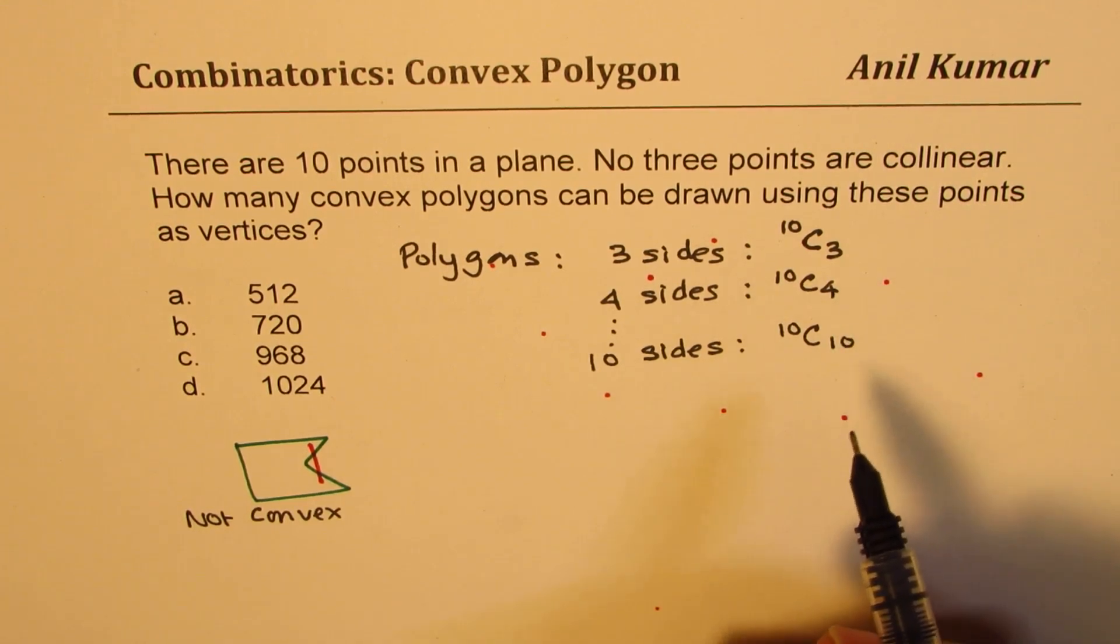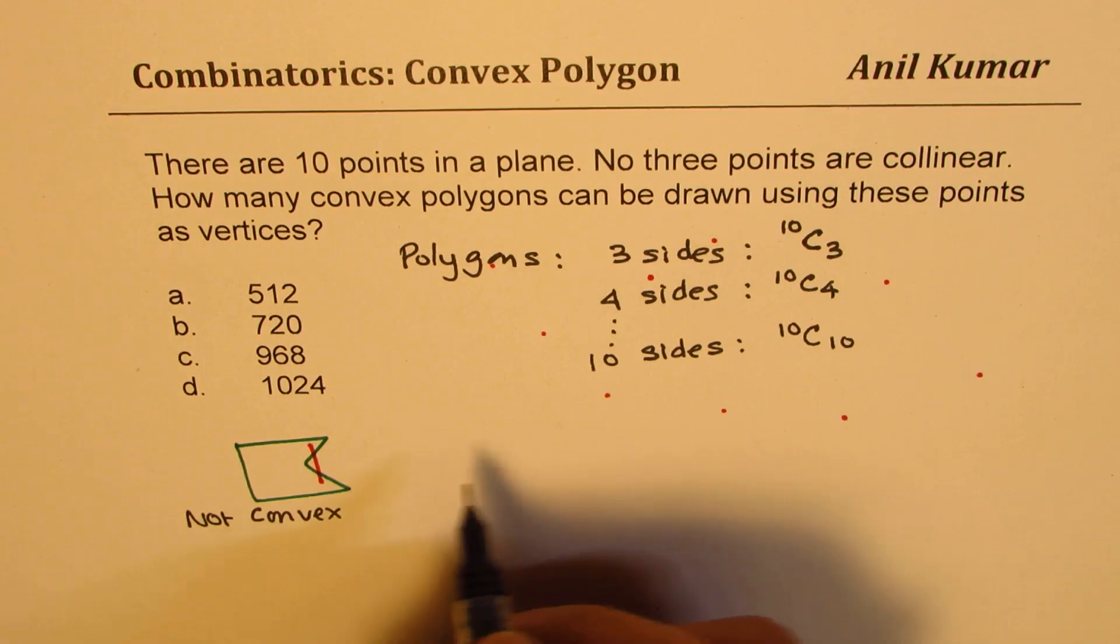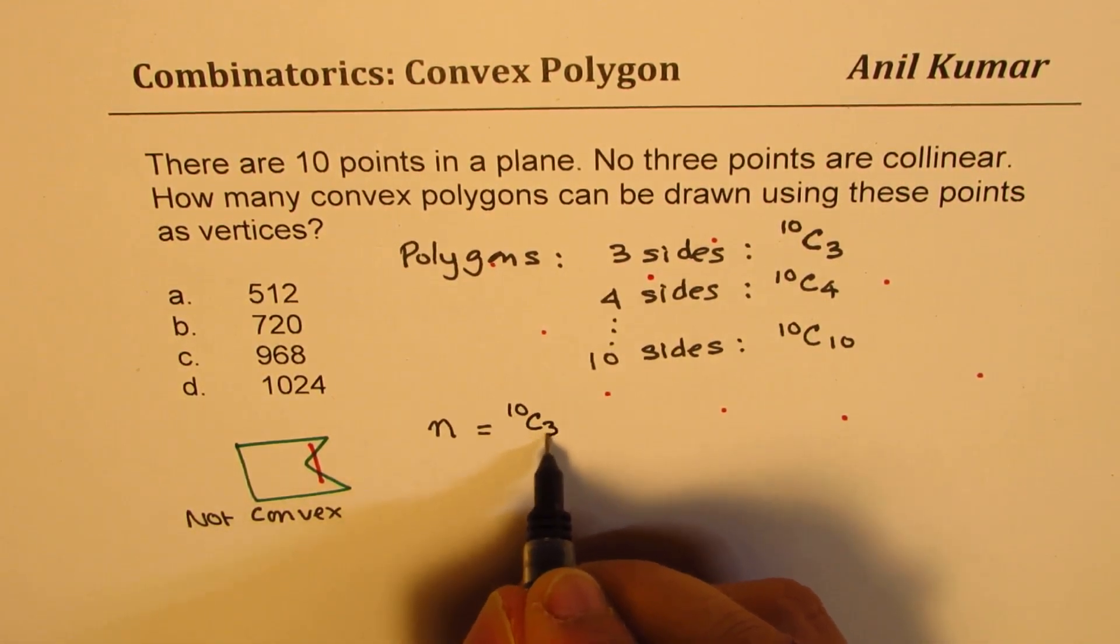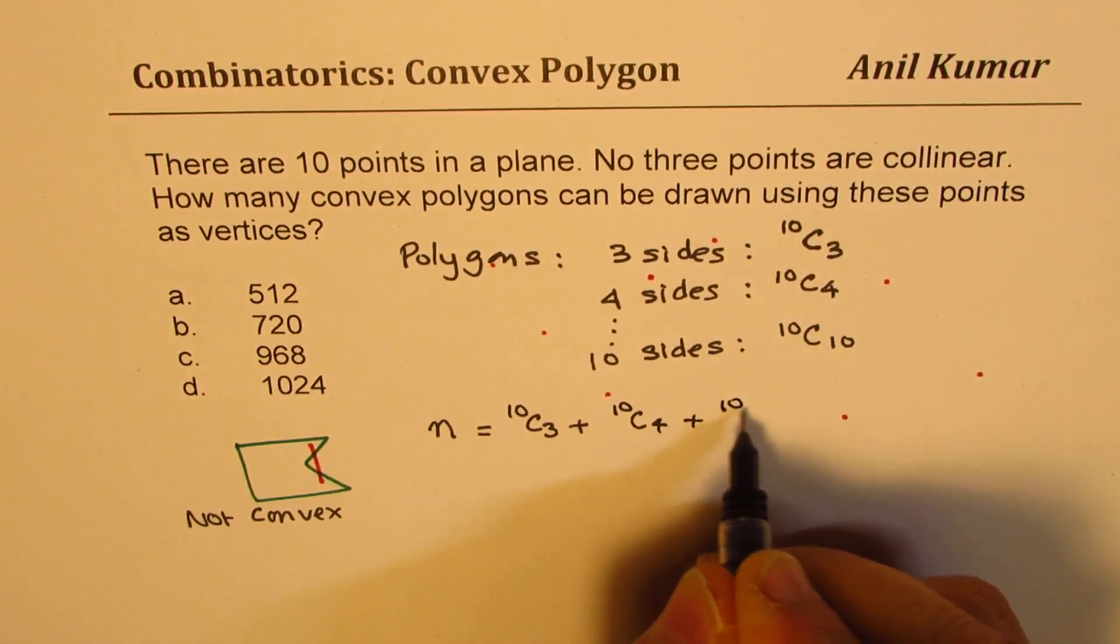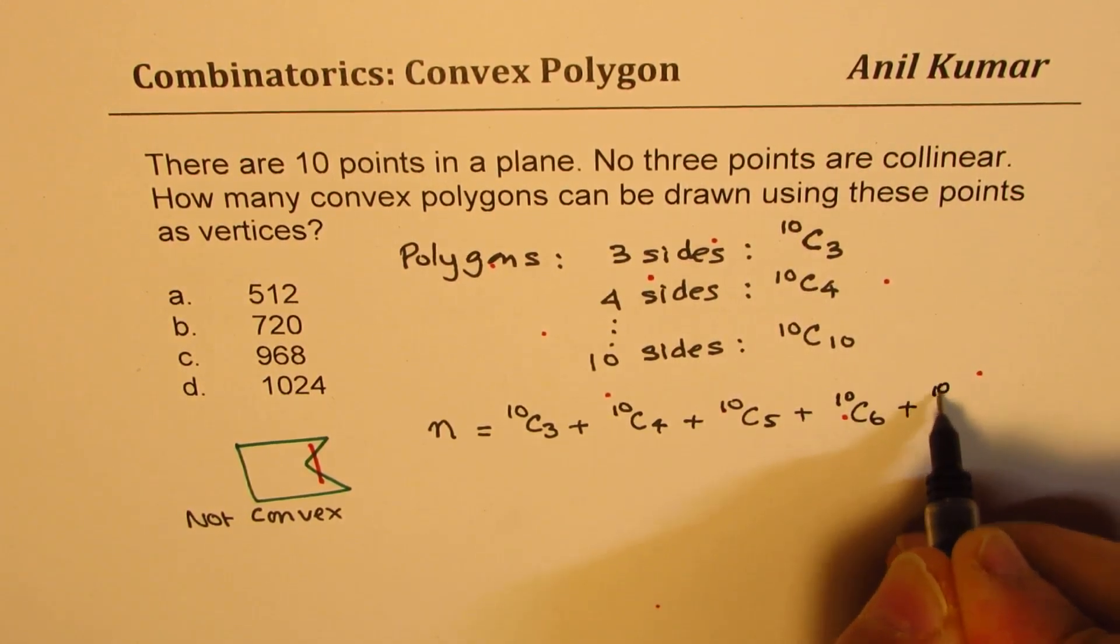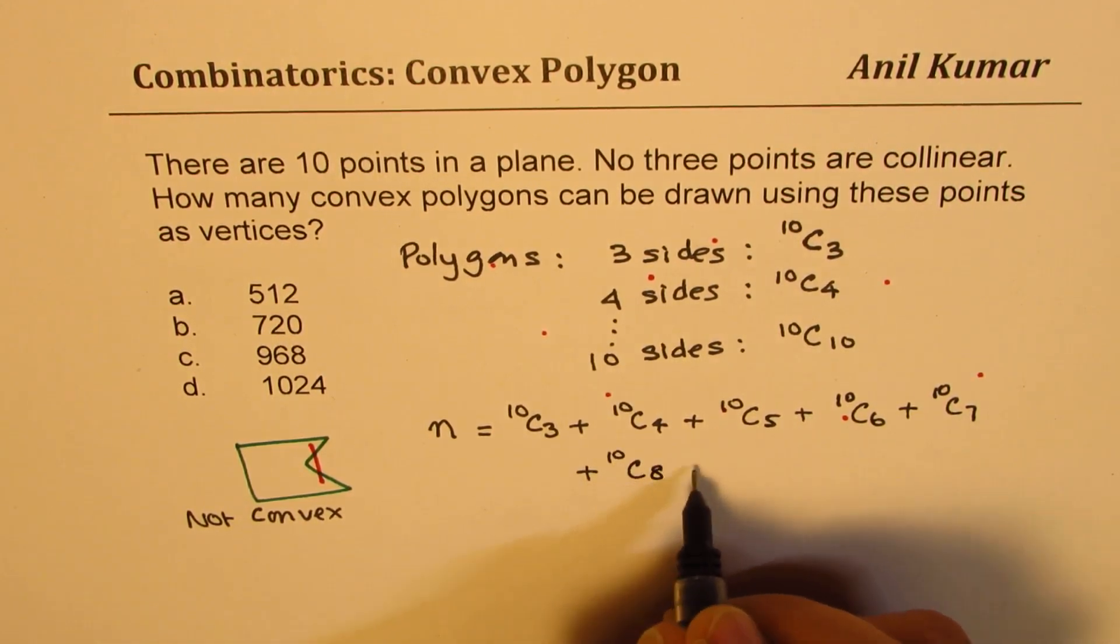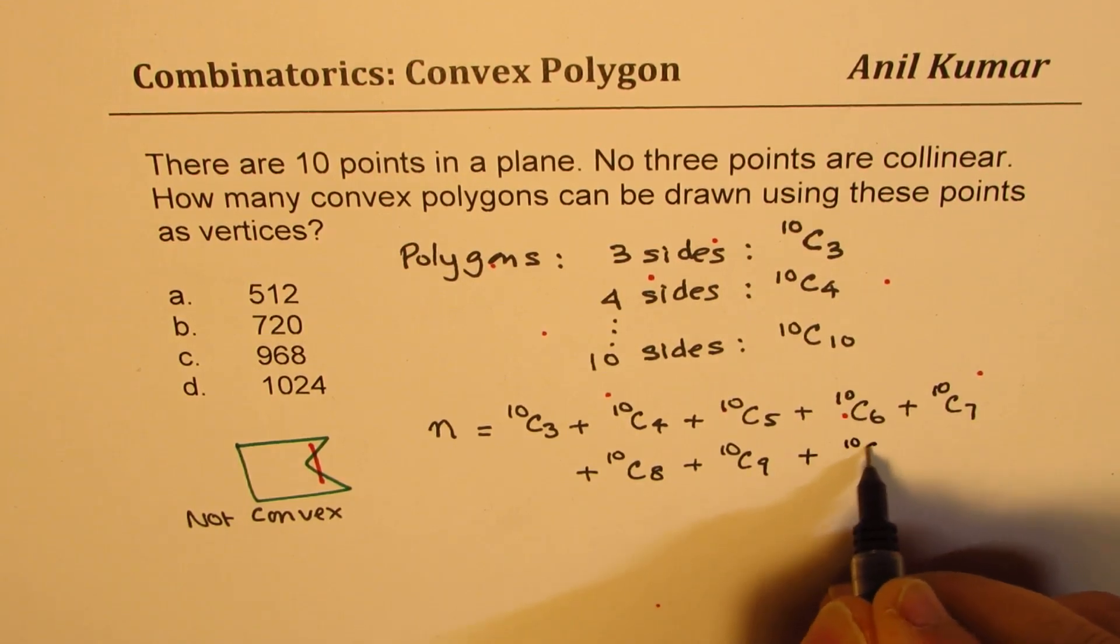So therefore, our answer is what? Our answer is sum of all of these, right? So total number n will be equal to, we can write 10C3 plus 10C4 plus 10C5 plus 10C6 plus 10C7 plus 10C8 plus 10C9 and plus 10C10.